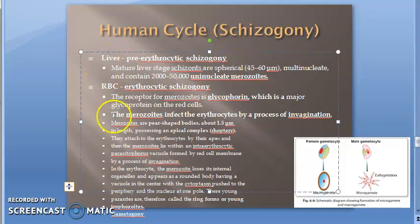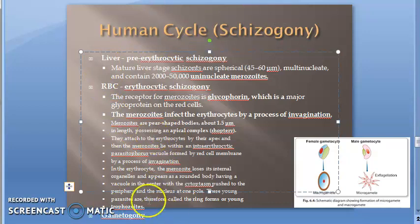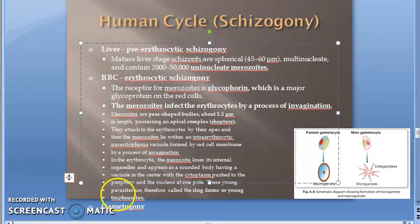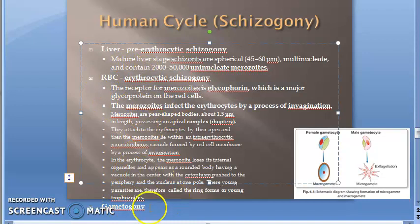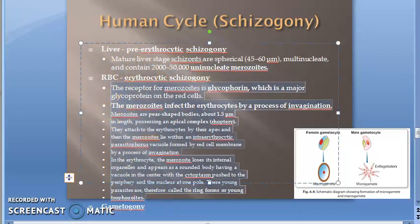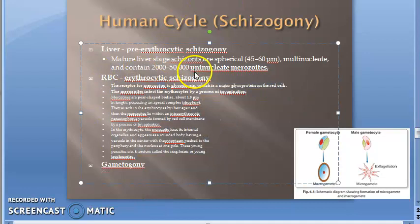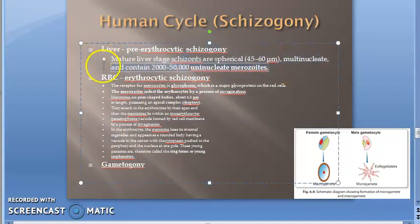In the human cycle — schizogony — you have to explain what happens in the liver and the RBC, then add one more heading: gametogony. So three things we have to write: liver, RBC, and gametogony. Let us look at the details of what happens in the liver.